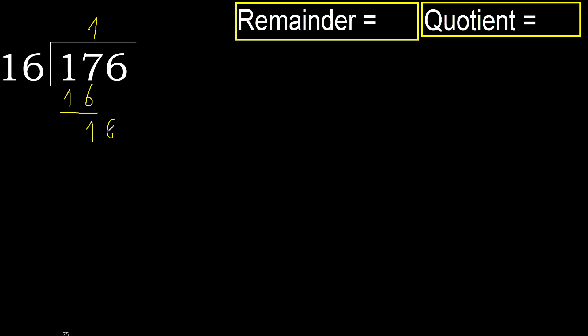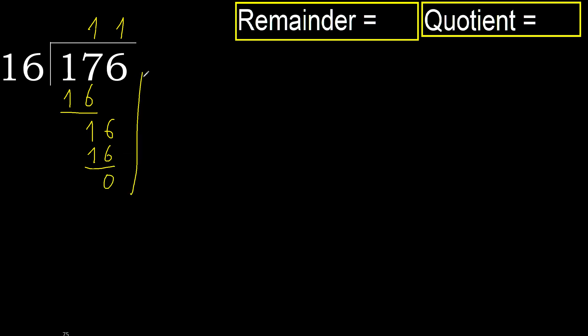Next, 16. 16 multiplied by 1 is 16. Subtract. Next — that is not a number, therefore finish it.